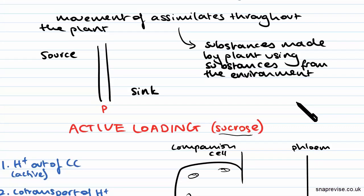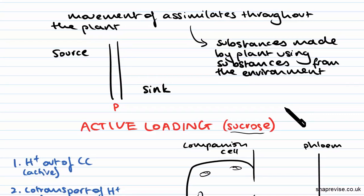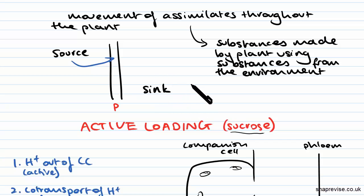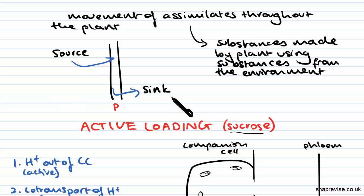Before we get started with active loading, a couple of things to draw your attention to are sources and sinks. Sources are parts of the plant that make sucrose and load it into the phloem. Sinks are places that use up sucrose and take it out of the phloem. Sources are generally leaves, while sinks would be growing parts of the plant or possibly roots.